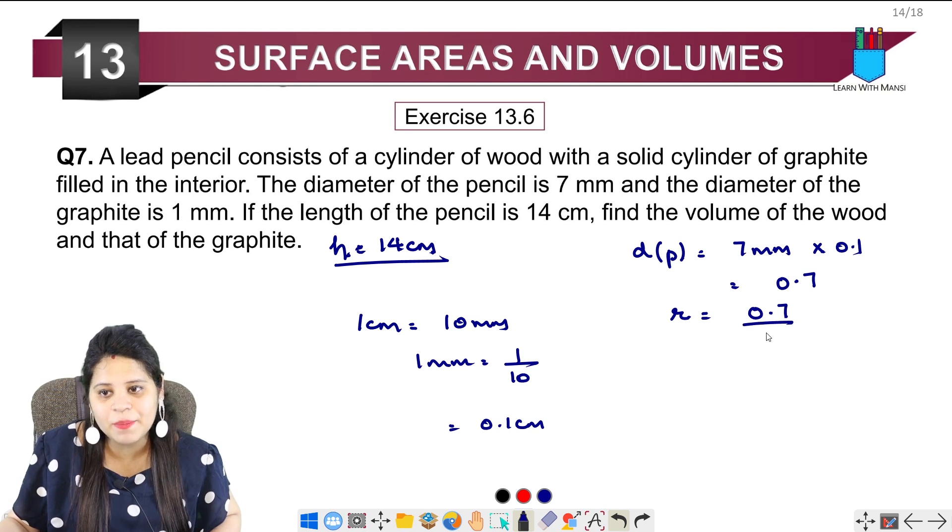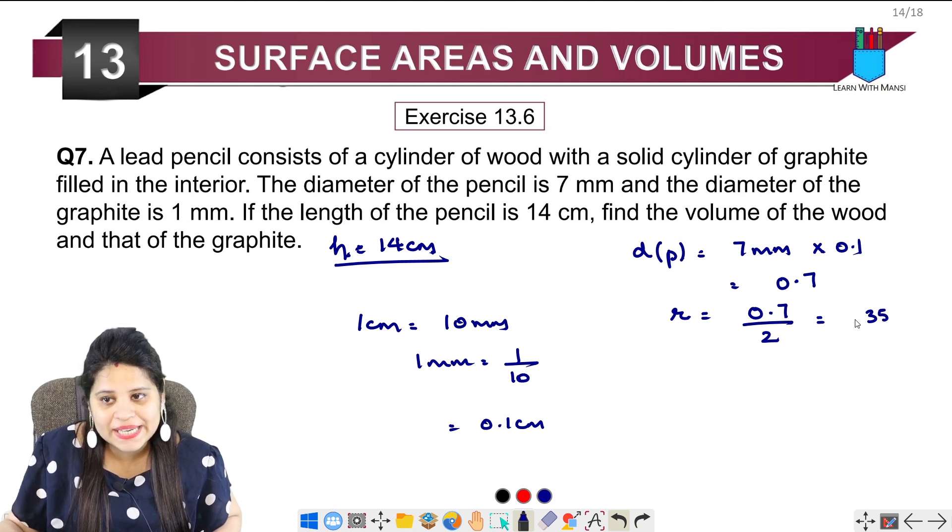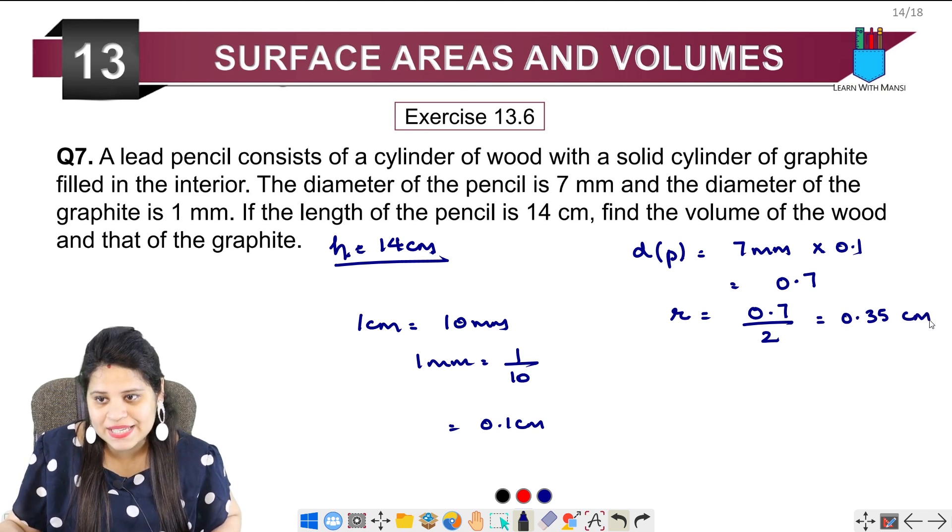Also we have to remove radius from here. So it will be 0.7 upon 2. So if we divide it, it will be 0.35cm.